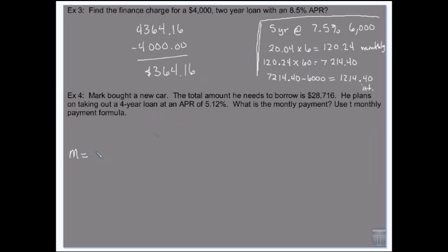Monthly payment formula: M equals the principal times the rate divided by 12 times 1 plus the rate divided by 12 raised to the power of 12 times the number of years, over 1 plus the rate divided by 12 to the power of 12 times the number of years minus 1. Where P is the total amount borrowed, R is the rate, and T is the number of years.